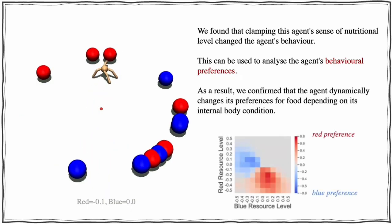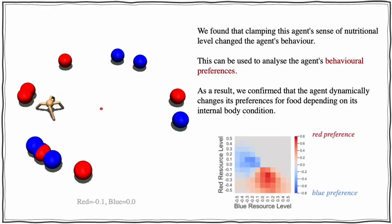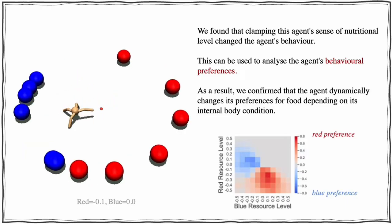As a result, we confirmed that the agent dynamically changes its preferences for food, depending on its internal body condition.